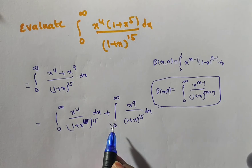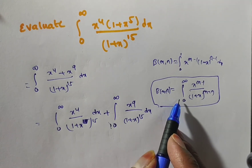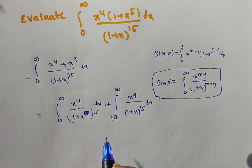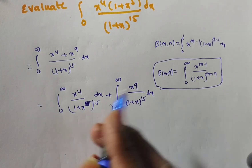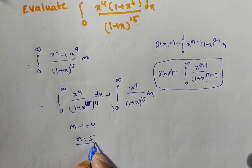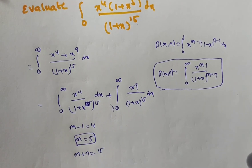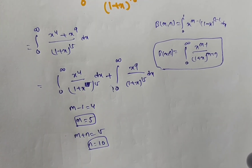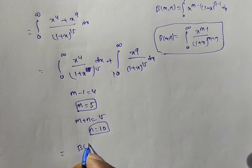Now compare these integrals with the Beta(m, n) standard form: x^(m-1) / (1+x)^(m+n). For the first integral, x^(m-1) = x⁴, so m - 1 = 4, giving m = 5. In the denominator, m + n = 15, so n = 15 - 5 = 10. Therefore the first integral equals Beta(5, 10).